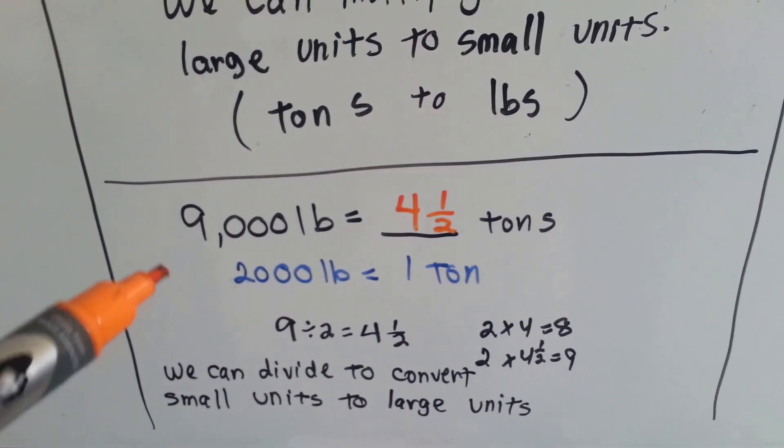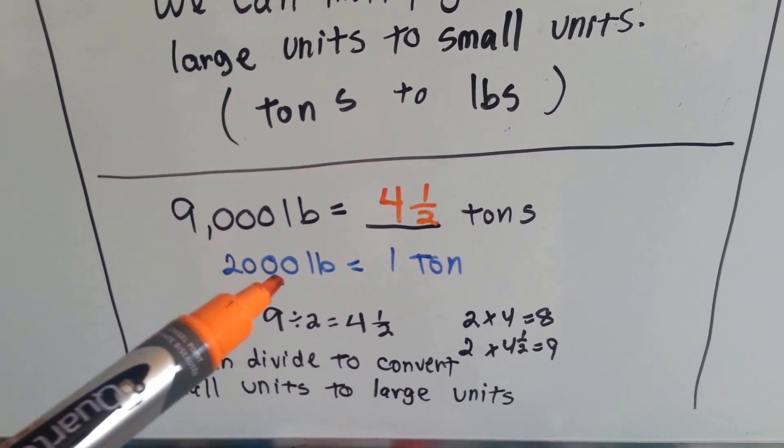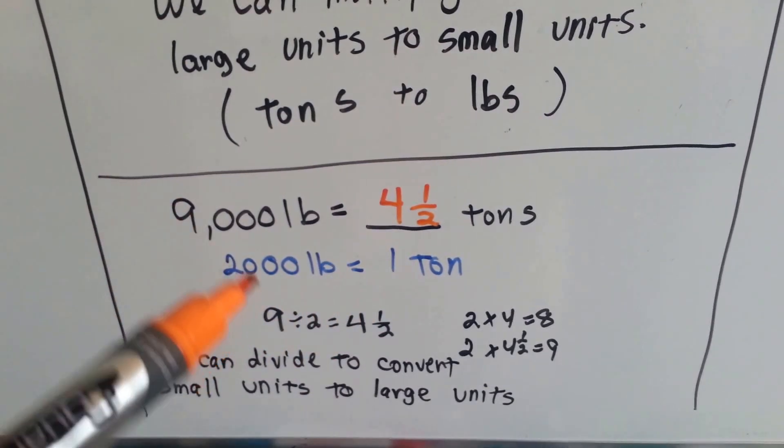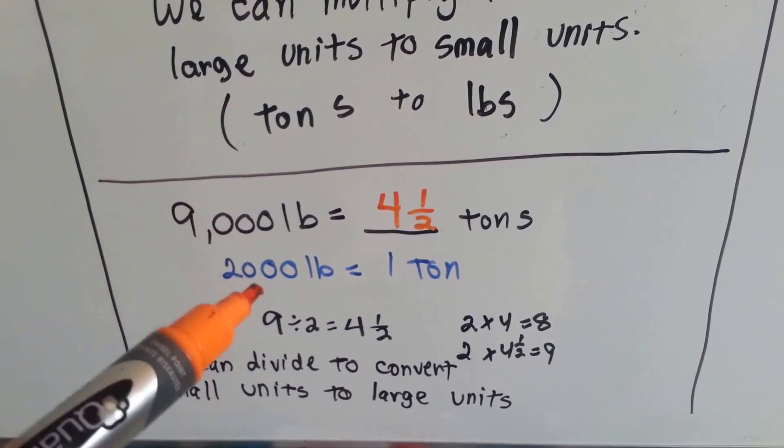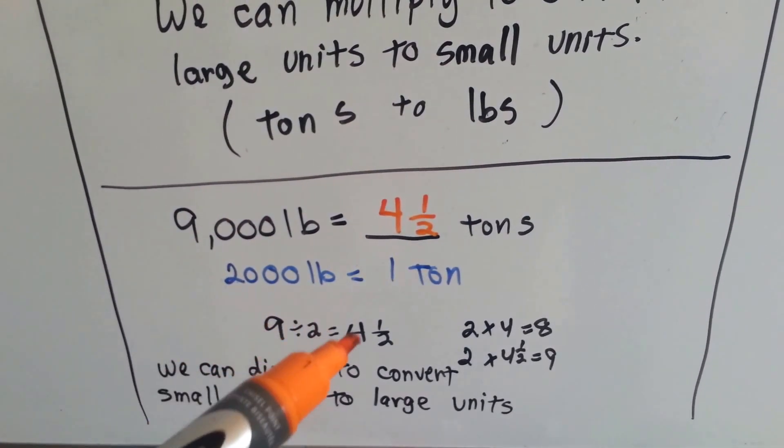If we had 9,000 pounds and wanted to know how many tons it was, knowing that 2,000 pounds is 1 ton, we could just divide. Because they're both 1,000 with the same amount of zeros, we could divide 9 by 2, and we would get 4.5.